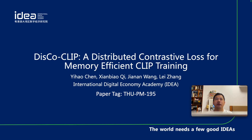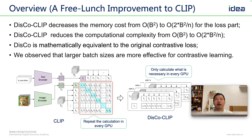It is a great pleasure to present our work, DiscoCLIP: Distributed Contrastive Loss for Memory-Efficient CLIP Training. This is joint work between Yi Haocheng, Xian Biao Qi, Jia Nan Wang, and Lei Zhang. We are from the International Digital Economy Academy (IDEA). In this paper, we propose DiscoCLIP, a free-lunch improvement to the original CLIP. DiscoCLIP can reduce both GPU memory cost and computational cost, and mathematically, distributed contrastive loss is equivalent to the original contrastive loss.